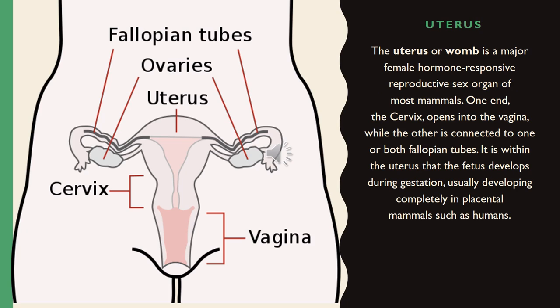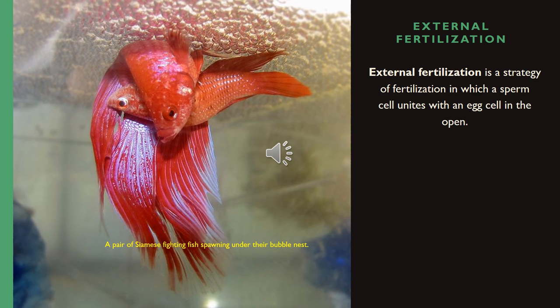The uterus, or womb, is a major female hormone-responsive reproductive sex organ of most mammals. One end, the cervix, opens into the vagina, while the other is connected to one or both fallopian tubes. It is within the uterus that the fetus develops during gestation, usually developing completely in placental mammals such as humans.